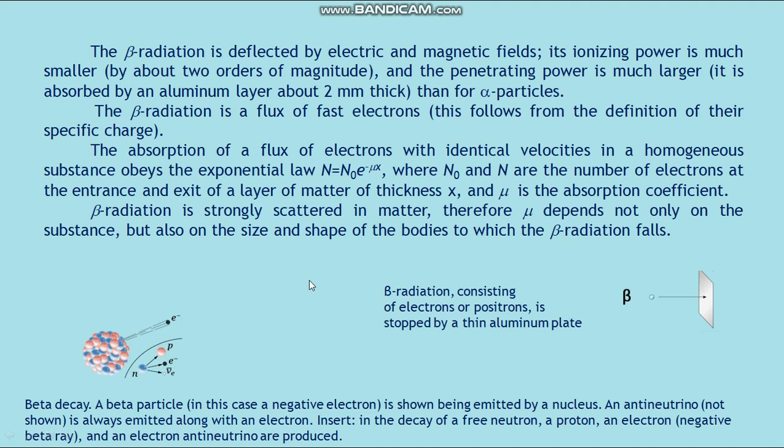The absorption of a flux of electrons with identical velocities in a homogeneous substance obeys the exponential law: N = N₀ × e^(-μx), where N₀ and N are the number of electrons at the entrance and exit of a layer of matter of thickness x, and μ is the absorption coefficient.